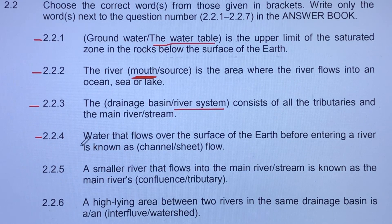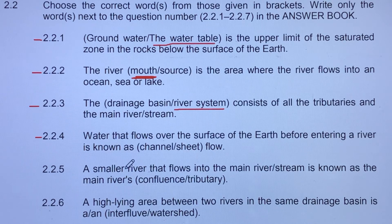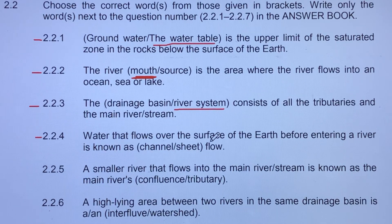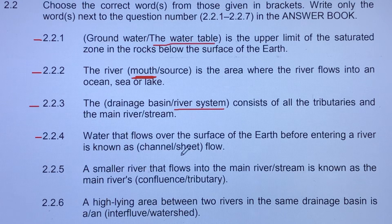2.2.4: water that flows over the surface of the earth before entering a river is known as a channel or sheet flow. The water is outside the river, running over the surface toward the streams, just before it meets the river. That is a sheet flow, also called surface runoff.